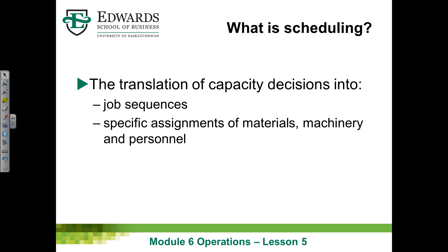Another way of looking at scheduling is that it involves the translation of capacity decisions into job sequences — in other words, in what sequence should you do jobs? And what are the specific assignments of materials, machinery, or personnel to meet the needs of the organization? This definition ties back to the inputs, outputs, and transformation concept from earlier in the operations management module. Scheduling is a vital transformation process in which organizations take inputs and produce outputs of value.